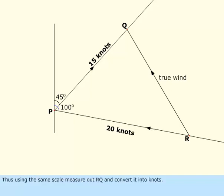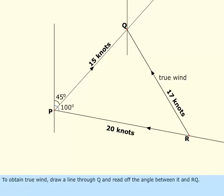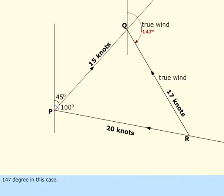Thus, using the same scale, measure out RQ and convert it into knots. To obtain true wind direction, draw a line through Q and read off the angle between it and RQ, 147 degrees in this case.